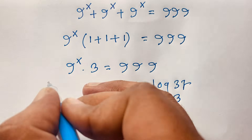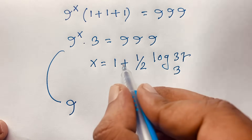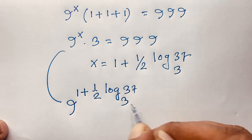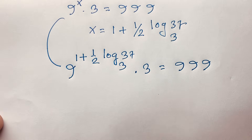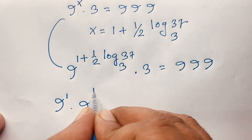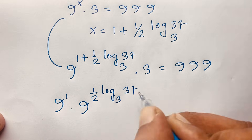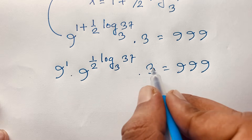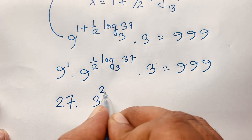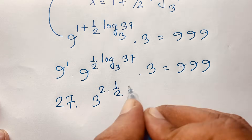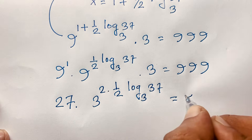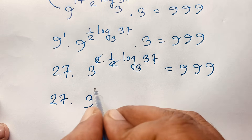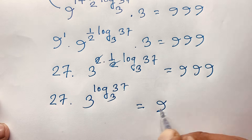Substituting x into the expression, 9 to the power (1 plus one-half log base 3 of 37) times 3 equals 999. This splits as 9^1 times 9^(one-half log base 3 of 37) times 3 equals 999. Since 9 equals 3^2, we get 3^2 to the power (one-half log base 3 of 37). The 2 and one-half cancel, leaving 3 to the power log base 3 of 37, which equals 37. So we have 9 times 37 times 3, which equals 27 times 37, which equals 999.